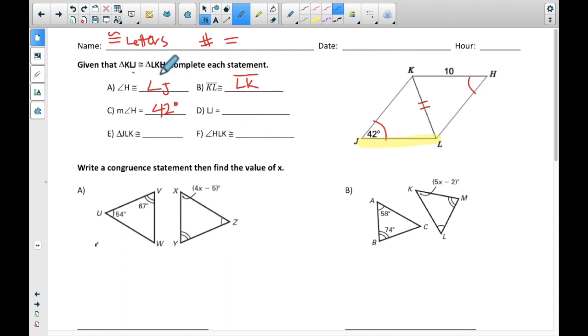So KL matches with LK. We actually already marked that one. LJ goes with KH. So where's LJ? Here's LJ. That's what I'm talking about, right? And LJ goes with KH. KH is this one over here. And so this one that's not marked yet, I'm going to put three on there just to remind myself.